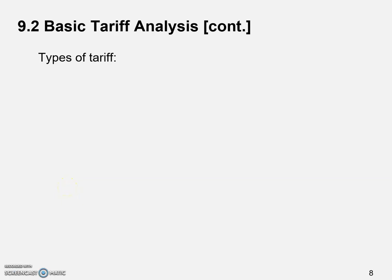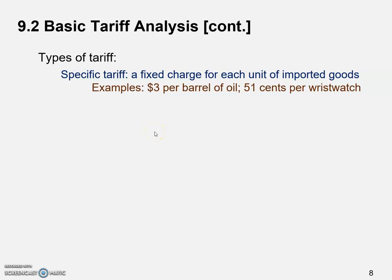Let's talk about two primary types of tariff. The first one is a specific tariff, which is a fixed charge for each unit of imported goods. What matters here is the number of units, not the price or value. A quick example would be a $3 tariff per barrel of oil. When the government collects the tariff, they just count the number of barrels imported — they don't care if one barrel costs $120 or $90.